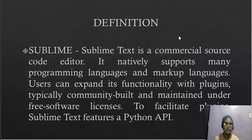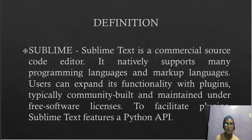Sublime Text is a commercial source code editor. It natively supports many programming languages and markup languages. Users can expand its functionality with plugins, typically community-built and maintained under a free software license. To facilitate plugins, Sublime Text features a Python API.